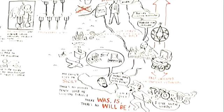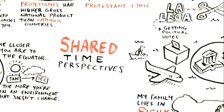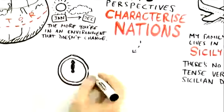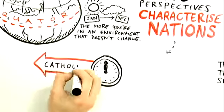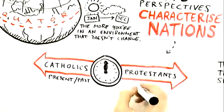So again, when you have a number of people who share a certain time perspective, then it does come to characterize the nation. In the same way, if you have a Catholic nation where people tend to be present or past-oriented, rather than a Protestant nation where people tend to be more future-oriented.